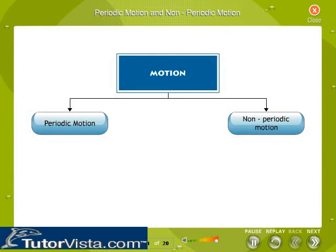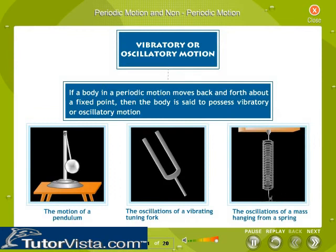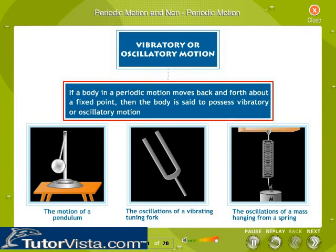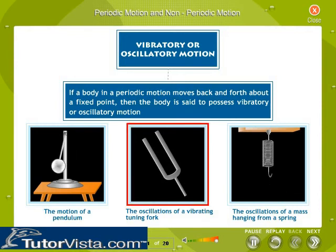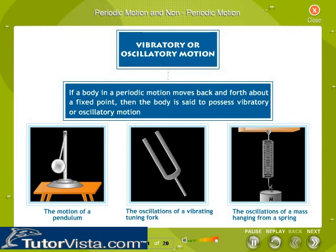The motion of a system as a function of time can be classified as periodic and non-periodic. If a body in a periodic motion moves back and forth about a fixed point, then the body is said to possess vibratory or oscillatory motion. The motion of a pendulum, the oscillations of a vibrating tuning fork, and the oscillations of a mass hanging from a spring are periodic as well as oscillatory.